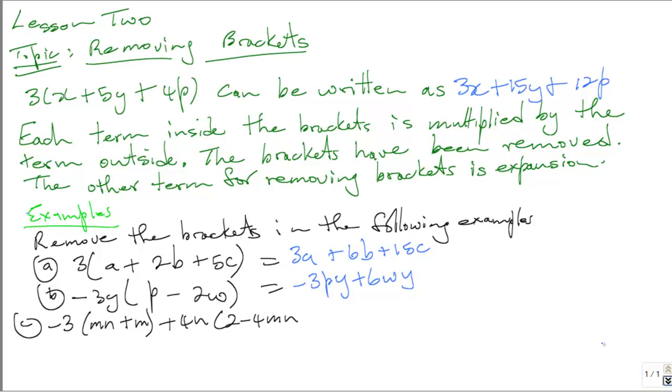The other example is this one. Negative 3 times mn plus m in brackets plus 4n and in brackets you have 2 minus 4mn. So you multiply negative 3 by mn. That is negative 3mn. And then you multiply negative 3 by positive m. When you multiply a negative by a positive, you'll get a negative answer. So that is negative 3m.